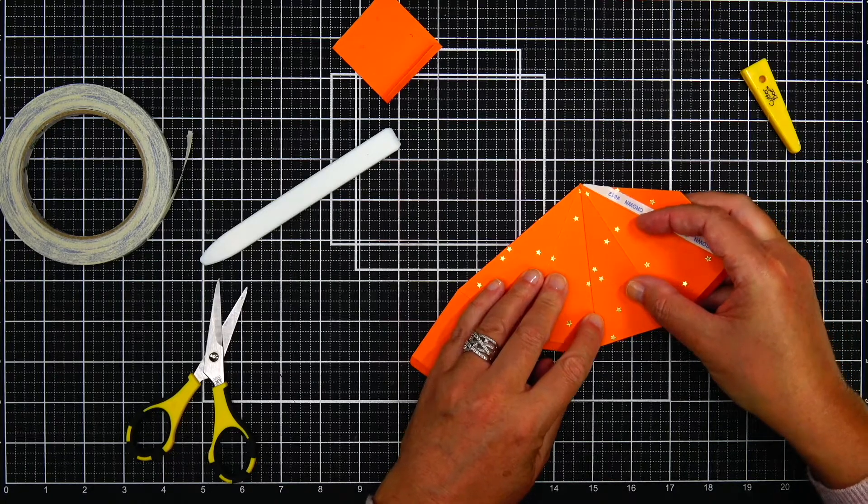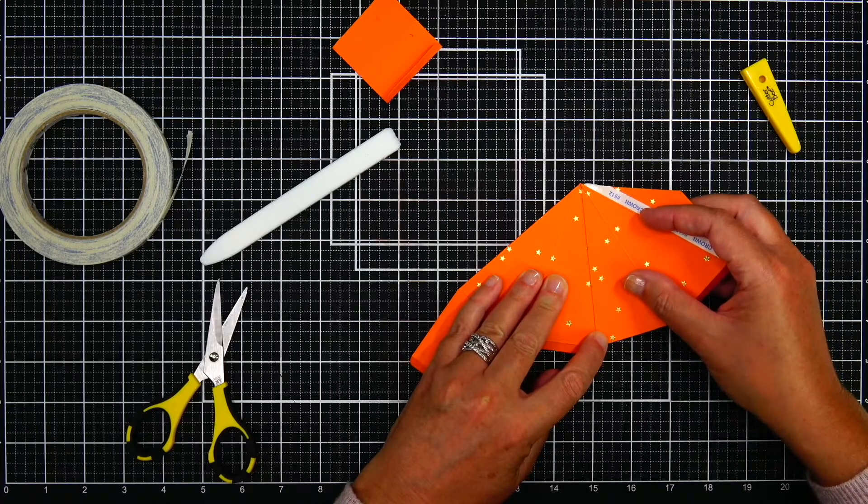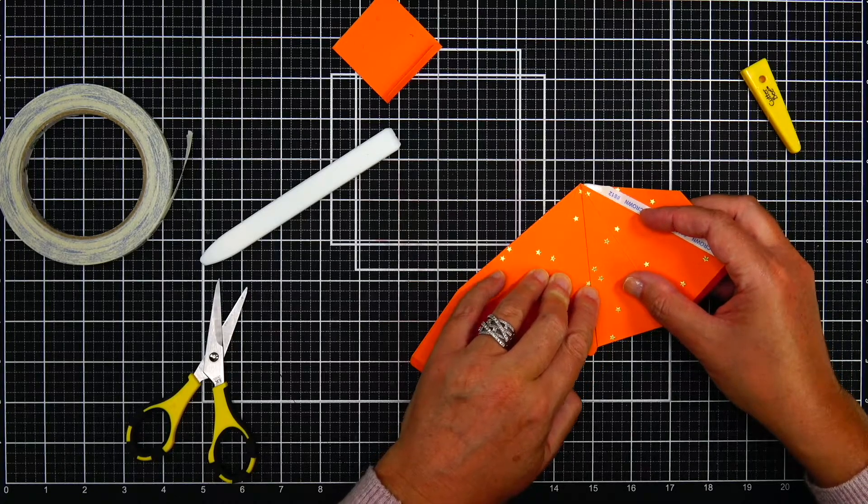Now I'm going to just match those edges up together again, making sure I am very close, if not on, that folded score line, so when the pyramid does fold, there's no edges sticking out.